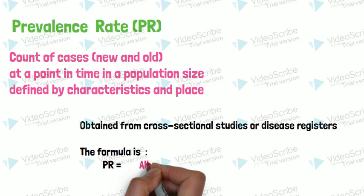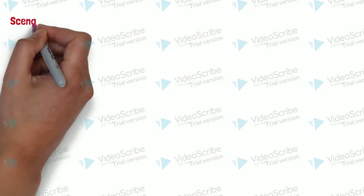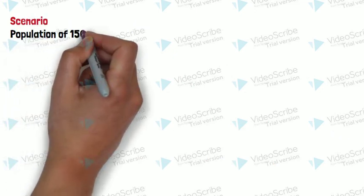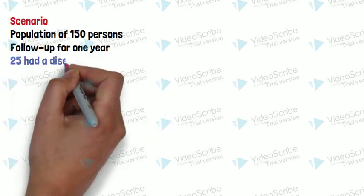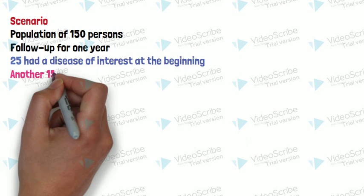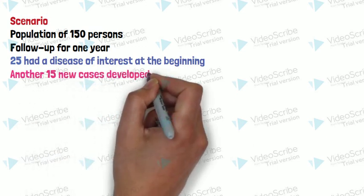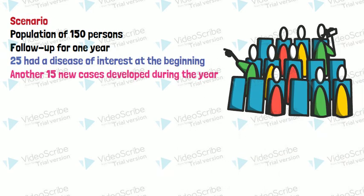Let us see an example. There is a population of 150 persons. For this, 50 persons will be followed for one year, and 25 of them developed disease at the beginning. Another 50 new cases developed during the year. Now you are asked to calculate point prevalence and period prevalence.